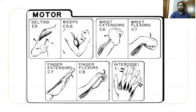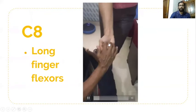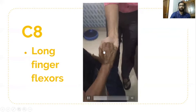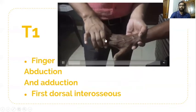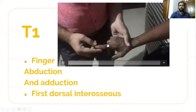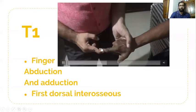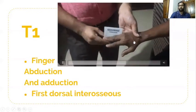Summary: C5 — deltoid; C6 — biceps and wrist extensors; C7 — wrist flexors, finger extensors, and triceps; C8 — finger flexors using the interlacing technique; T1 — intrinsic muscles, checked via finger abduction and adduction against resistance. For T1, the first dorsal interosseous is also inspected or palpated during the movement.